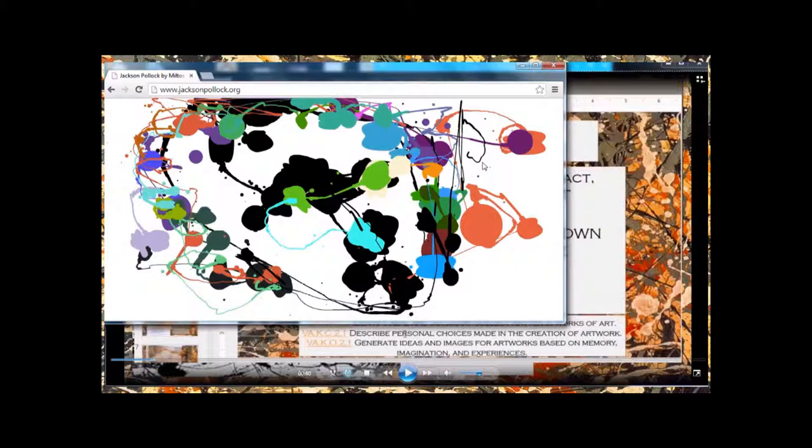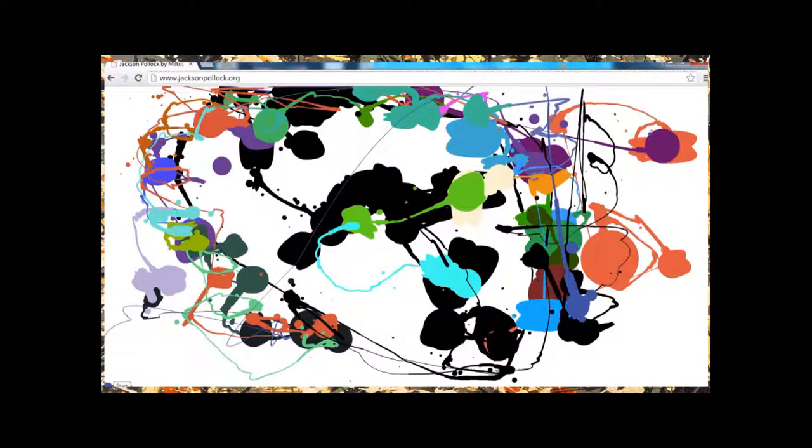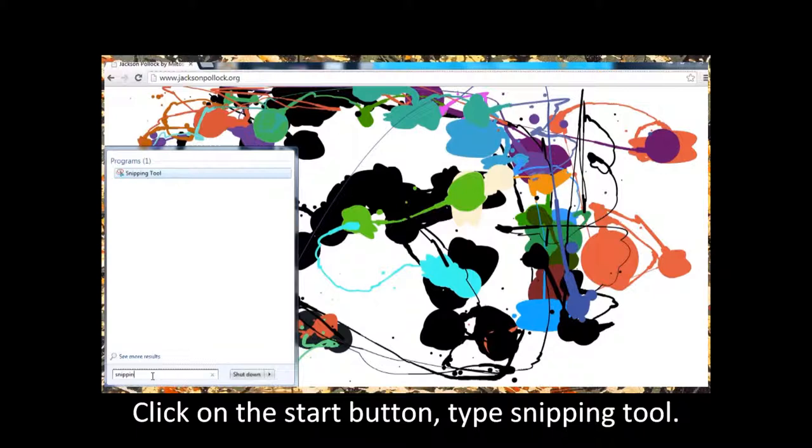So, once I'm finished with my design, let's say I'm done with this and I really like it and I'm happy with it. If you go down to the start button of your computer, you can type in snipping tool. This is the easiest way that I found to save a picture of your artwork. It's called snipping tool. You're going to click on it.